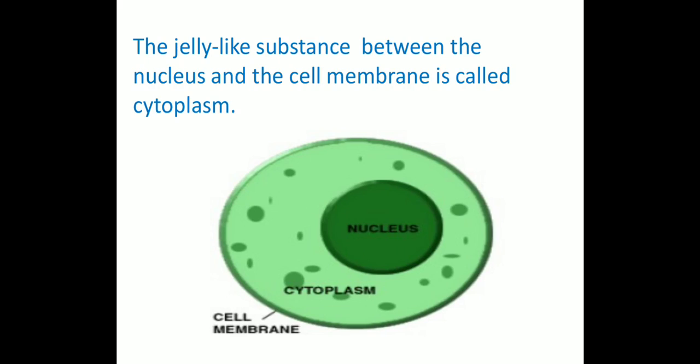Next, we will study about the cytoplasm. Cyto means cell and plasma means gel-like structure. It is a jelly-like substance present between the cell membrane and the nucleus. Various other components and organelles of the cell are present within the cytoplasm, floating around inside it.